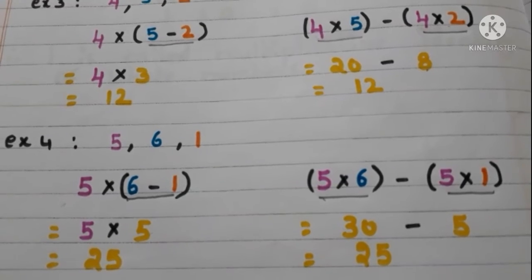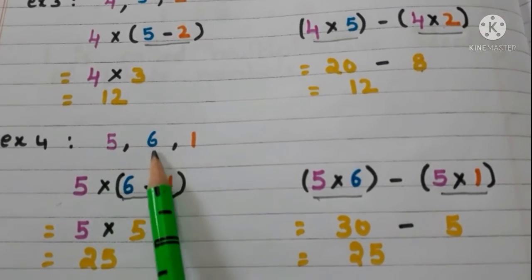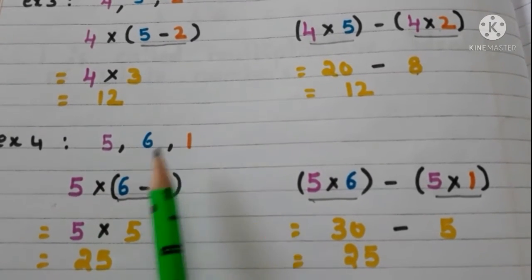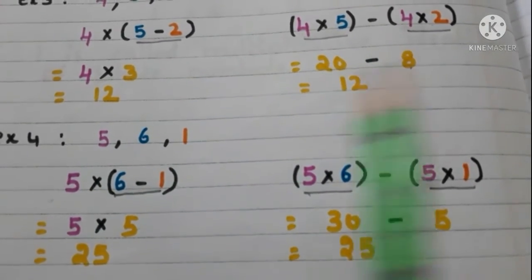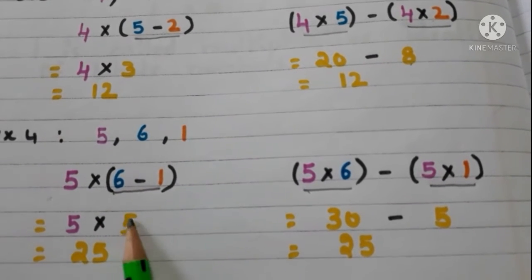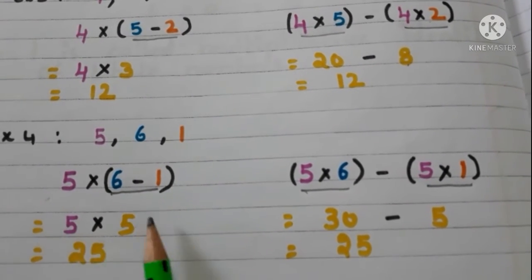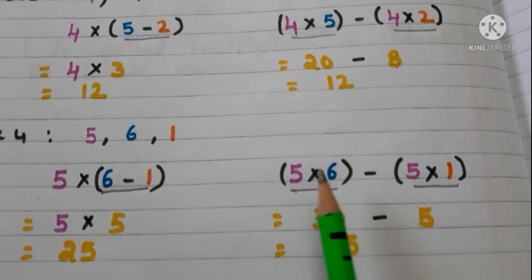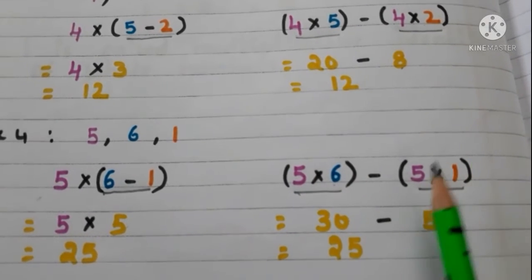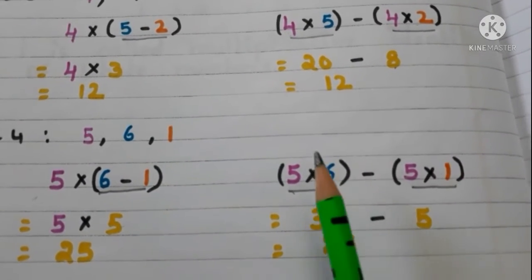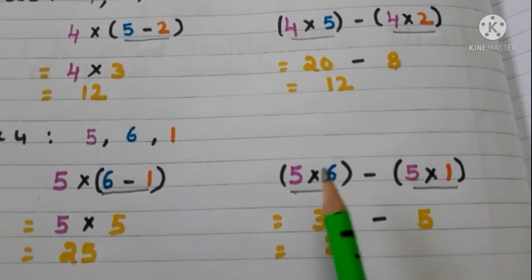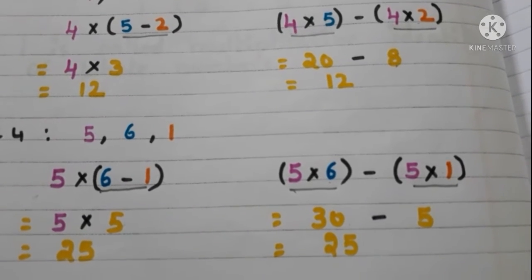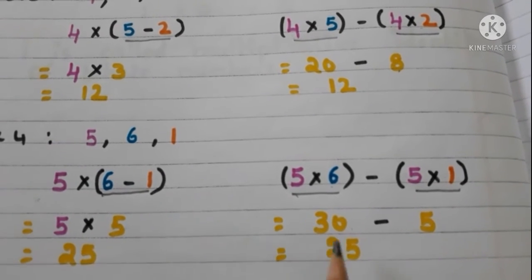Now, let us see another example. Take 3 whole numbers 5, 6 and 1. First, we take the product of 5 and difference of 6 and 1. 6 minus 1 is 5. Now, multiply with 5: 5 times 5 are 25. Now, let us solve in another way. First, multiply 5 and 6, then multiply 5 and 1, and take the difference of these 2. 5 times 6 are 30, 5 times 1 are 5. 30 minus 5 is 25. Here we get the same answers.